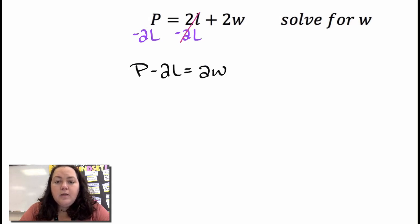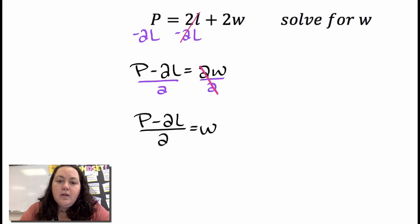And I want to get rid of that 2 that's connected to the w by multiplication, so I'll divide both sides by 2. And I have to divide everything that's on that left side, so it's p minus 2l all over 2 equals w.